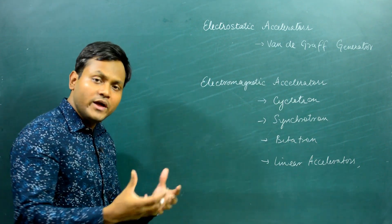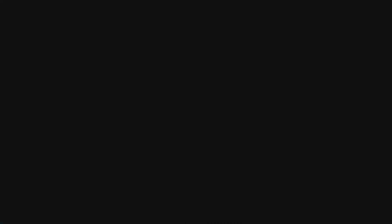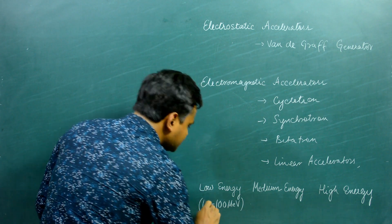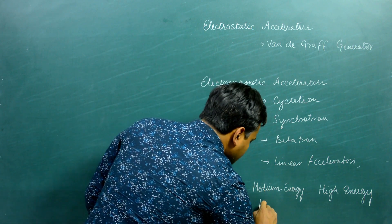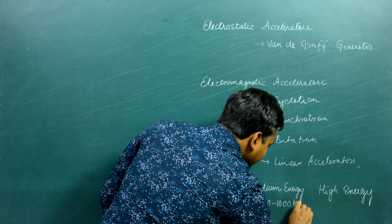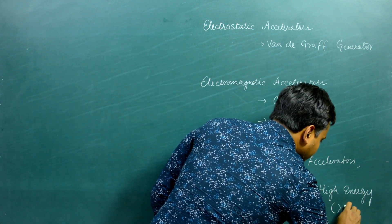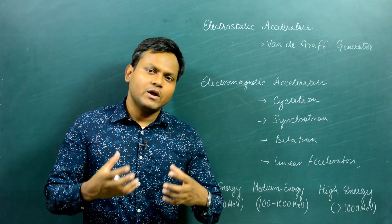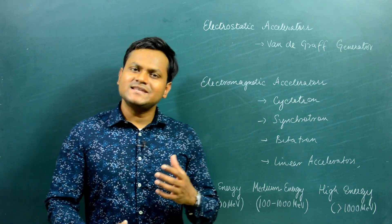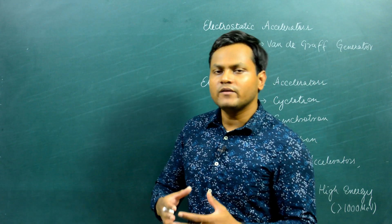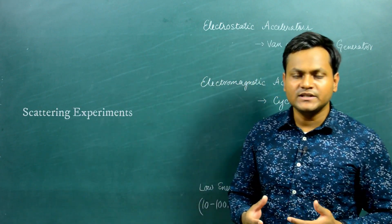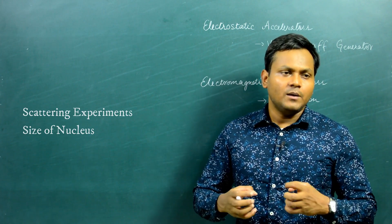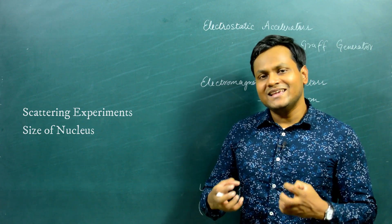We can also distinguish accelerators based upon their energy. Accelerators can be specified as low energy, medium energy, or high energy. If a particle accelerator can accelerate a particle from around 10 MeV to 200 MeV, that is a low energy particle accelerator. If it accelerates a particle from around 100 MeV to 2000 MeV, that is a medium energy particle accelerator. If it can accelerate a particle to greater than 1000 MeV, that is a high energy particle accelerator. Different energies are required for different nuclear experiments. For example, low energy accelerators are commonly used for scattering experiments to study the size of a nucleus.